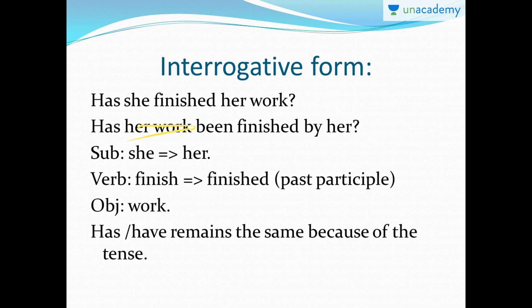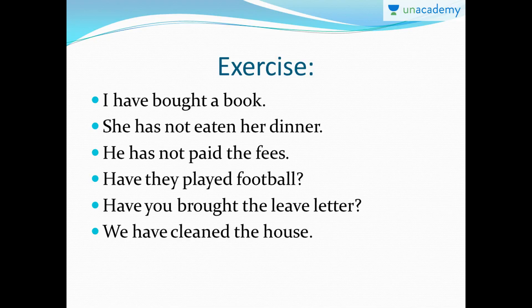This next slide is an exercise — try it as a test; the answers are in the following slide. First one: 'I have bought a book.' This is active voice because 'I' is the subject at the beginning and 'book' is the object at the end. In passive voice it becomes: 'A book has been bought by me.' We use 'has' because 'book' is singular.